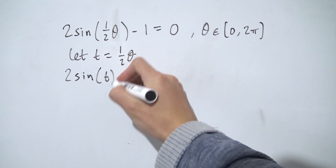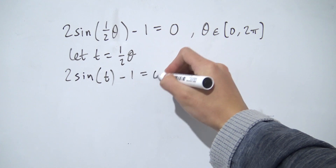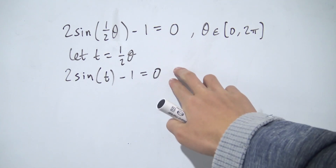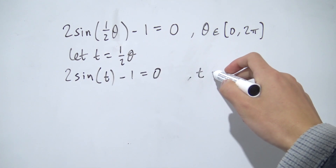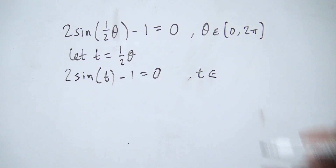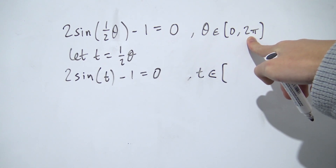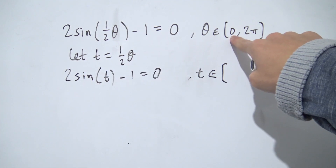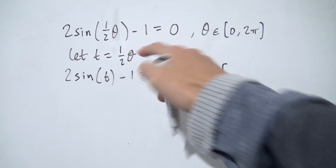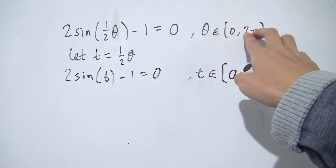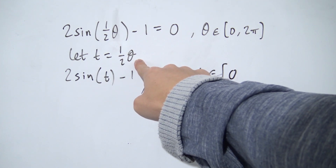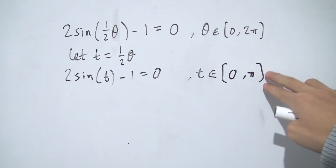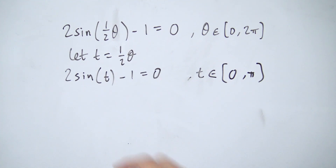If we do this substitution, we're going to get 2·sin(t) minus one equals zero, replacing one-half theta with t. Notice that in the original question we were solving for theta between zero and two pi, but now we're working with t's, so we have to change our domain. All we need to do is substitute the endpoints into our substitution. Plugging zero in: t = (1/2)·0 = 0. Plugging two pi in: t = (1/2)·2π = π. So our domain changes from [0, 2π] in theta to [0, π] in t.